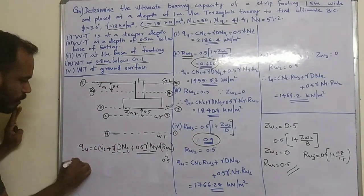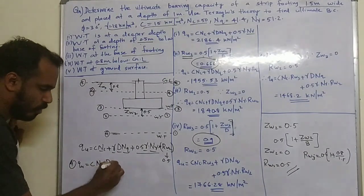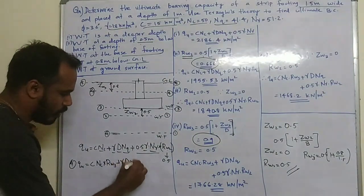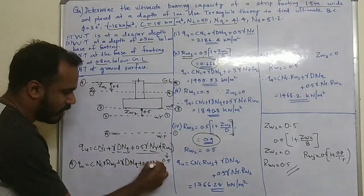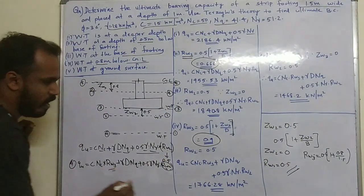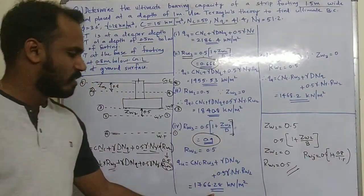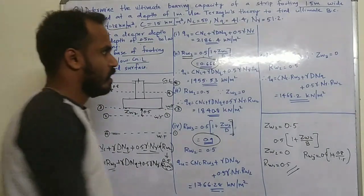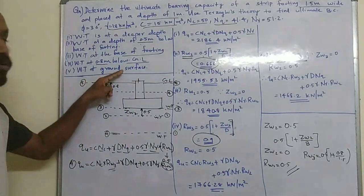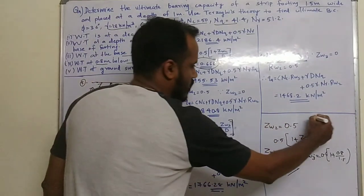For Condition 4, the equation is Q is equal to c·Nc multiplied by Rw3, plus gamma·D·Nq, plus 0.5·gamma·B·N-gamma multiplied by Rw2. Substituting Rw2 = 0.5 and Rw3 = 0.9 gives Q = 1766.28 kN/m².